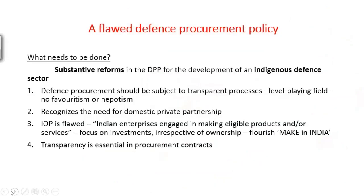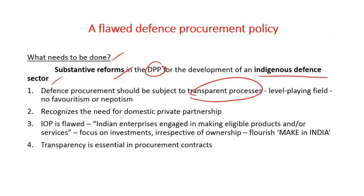To make the defense procurement policy effective and efficient, substantive reforms must be introduced. The first reform would be introducing transparency and a level playing field that doesn't encourage favoritism or nepotism. The second reform would be to recognize the need for domestic private partnership. The current offset policy is focused only on Indian enterprises engaged in making eligible products and services.